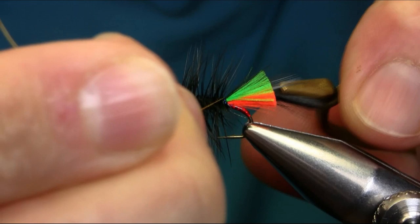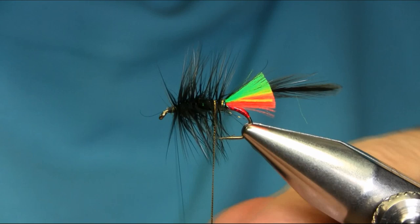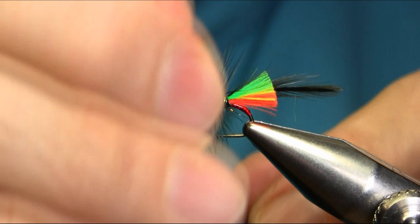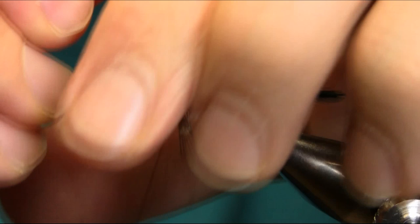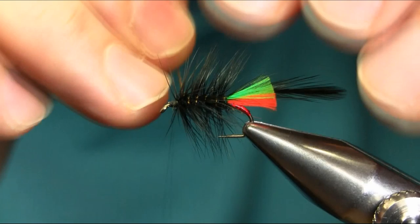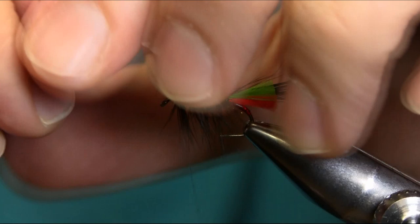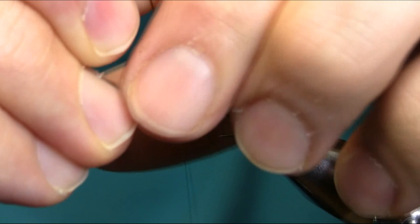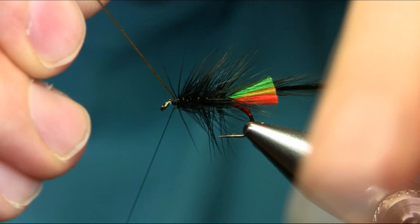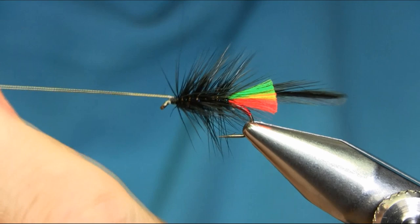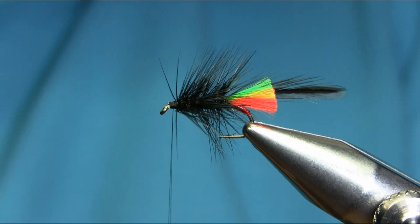Catch it with the tinsel rib material and then come back to secure each turn. Pull everything back, all the hackle fibers, and then catch this. Now secure this properly and cut this off.